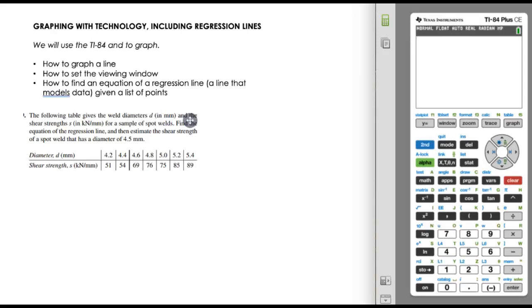So to begin with, let's look at a problem. And our problem here says the following table gives the weld dimensions, the diameter d in millimeters, and the shear strengths s for a sample of spot welds. Find the equation of the regression line and then estimate the shear strength of a spot weld that has a diameter of 4.5 millimeters.